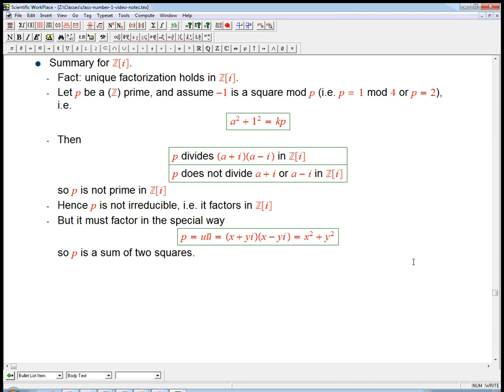Let's summarize where we are for the Gaussian integers and the sum of squares problem. It's a fact, and proving this goes just a little bit beyond what I want to do, that unique factorization does hold in the Gaussian integers just as it holds in the ordinary integers.